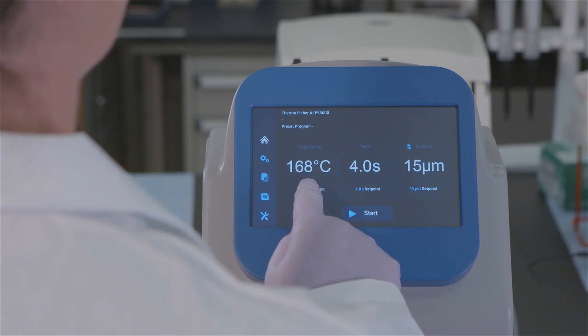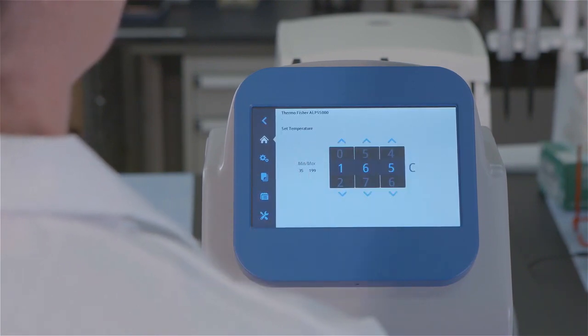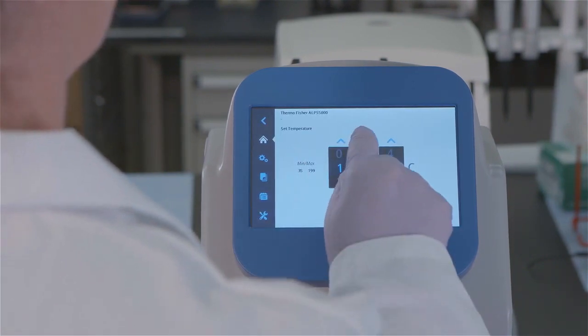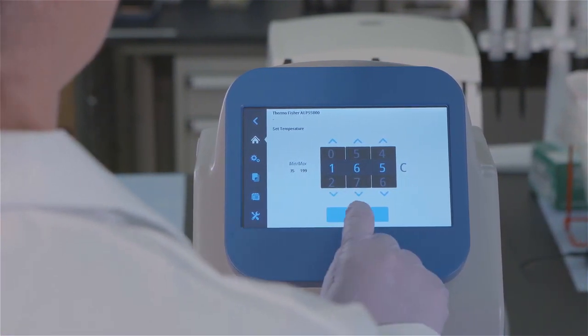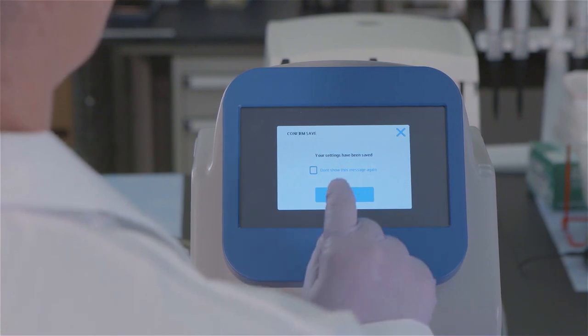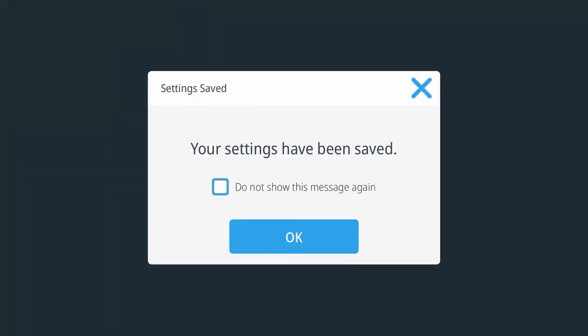To adjust temperature, time or distance, simply tap on the setting to get started. Then tap the stepper control with the up and down arrows to make adjustments. Follow the prompts on the save settings screen to save your settings.